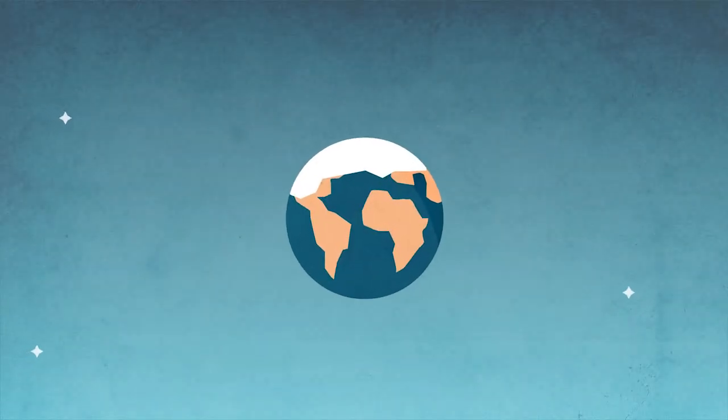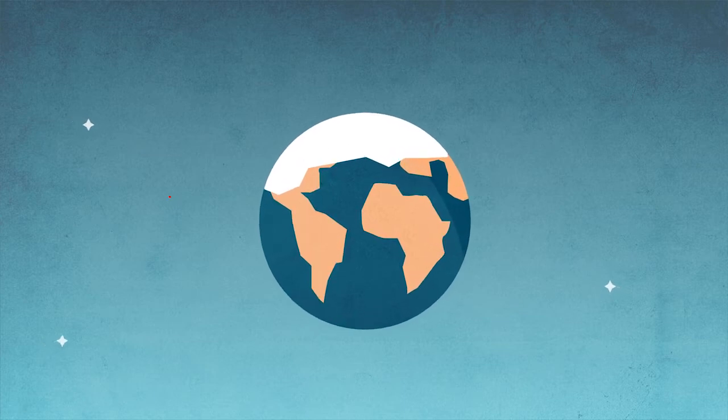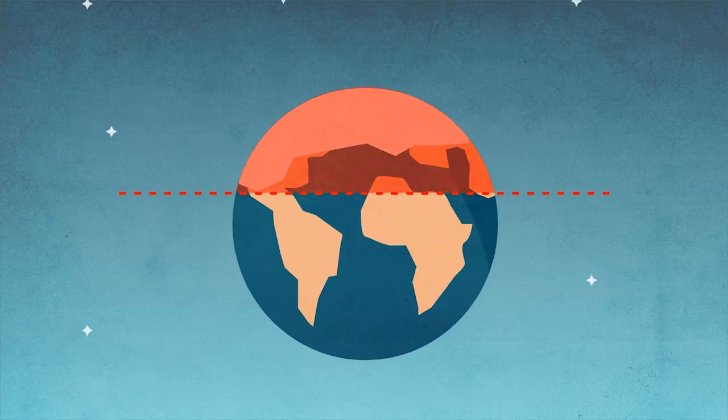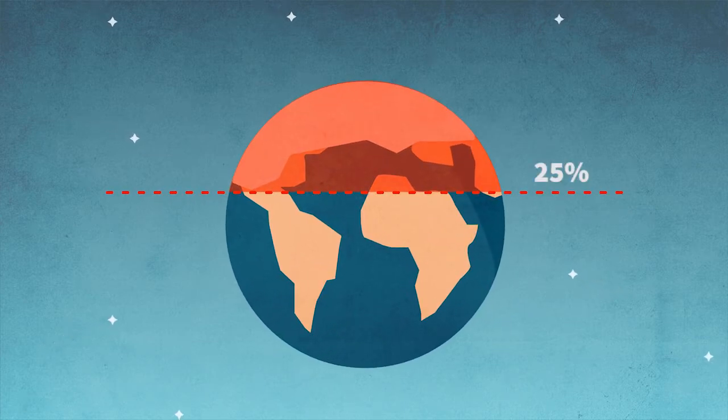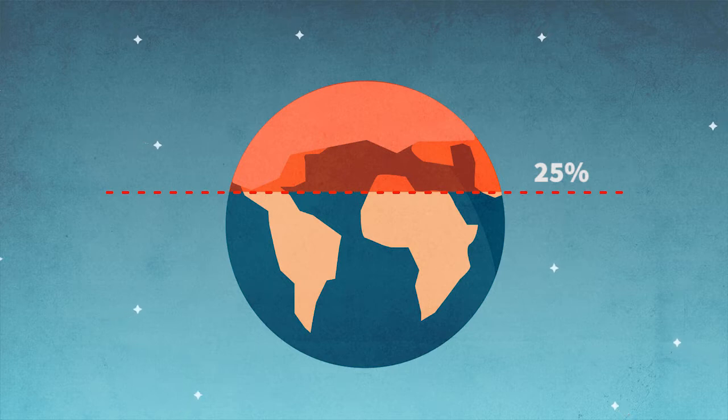Deep layers of frozen earth, or permafrost, lie packed beneath the Arctic and Siberia. Permafrost represents 25% of the Northern Hemisphere's land mass.